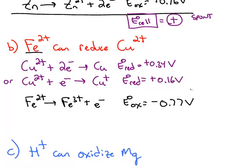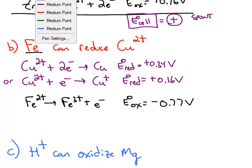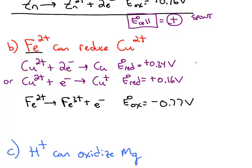So in this case, there's actually two possible reactions that can occur. We could take the first reduction and pair it up with this oxidation. Positive 0.34 and negative 0.77 is going to give us a cell voltage that's negative. So this reaction is not spontaneous.